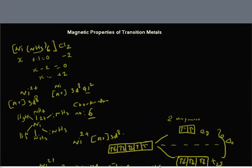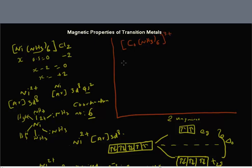Now let's look at a different complex ion. Consider a cobalt complex ion: Co(NH3)6 with an oxidation state of 3+. A neutral cobalt atom has the condensed electron configuration 3d⁷ 4s², so Co³⁺ would be 3d⁶.